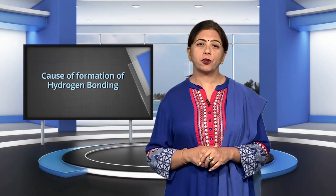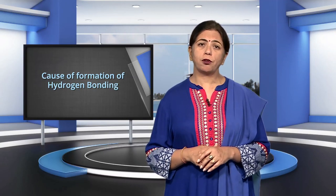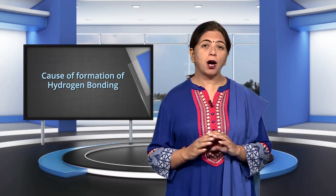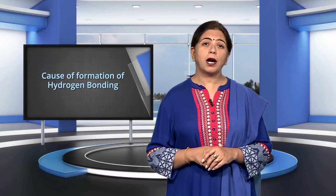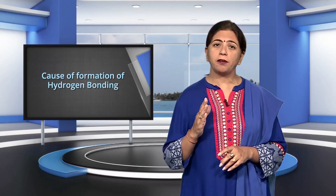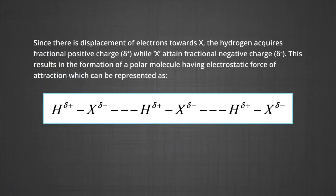The cause for the formation of hydrogen bonding: when hydrogen is bonded to a strongly electronegative element X, the electron pair shared between the two atoms moves far away from the hydrogen atom. As a result, the hydrogen atom becomes highly electropositive with respect to the other atom X (which can be F, O or N). Since there is a displacement of electrons towards X, hydrogen acquires a fractional positive charge (δ+) while X attains a fractional negative charge (δ−), resulting in a polar molecule with electrostatic force of attraction represented by a dotted line.